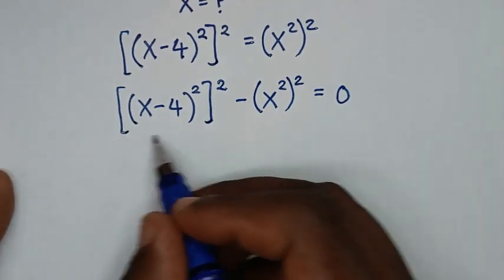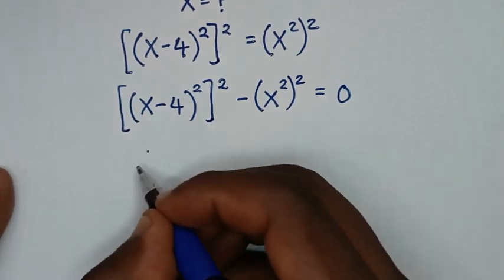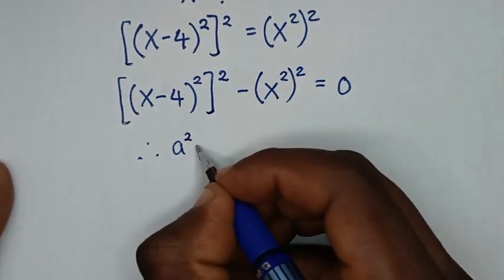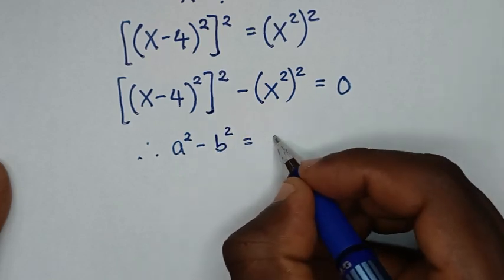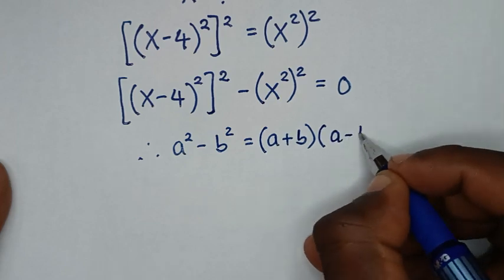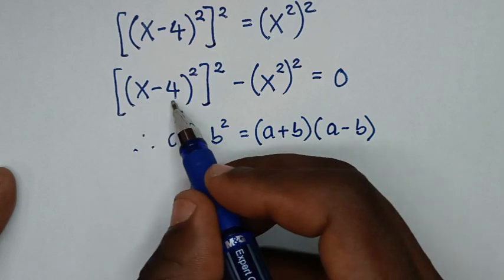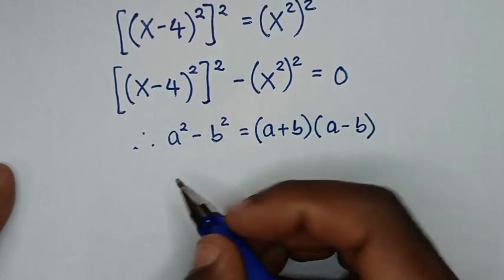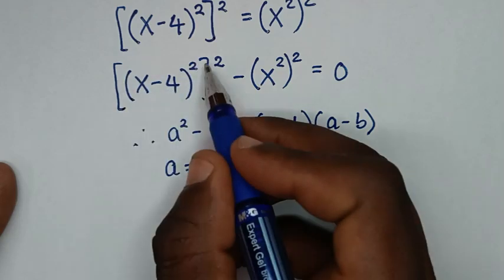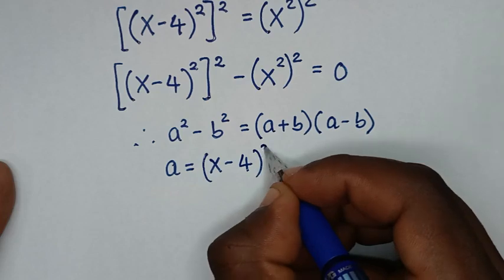In the next step, from here it is now in the form of difference of two squares. So therefore, we'll apply the difference of two squares rule: a squared minus b squared is equal to (a plus b)(a minus b). When we compare a squared with (x minus 4) bracket squared, bracket squared, then a is equal to the expression inside the outer bracket, which is (x minus 4) bracket squared.